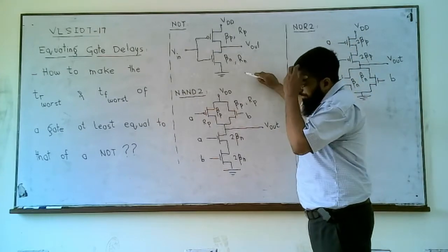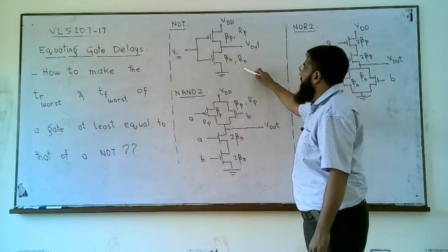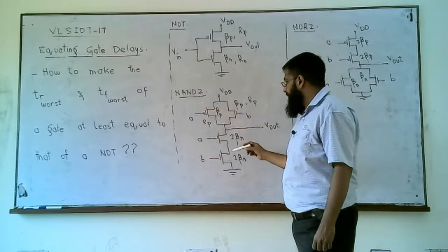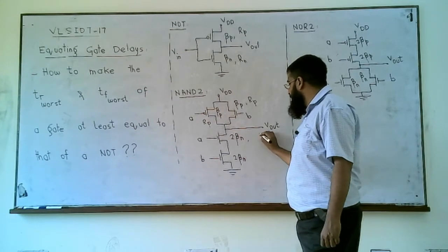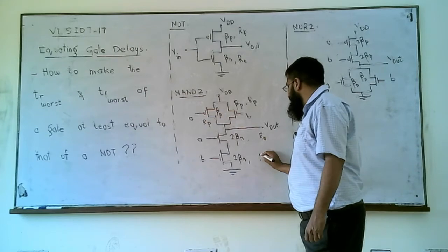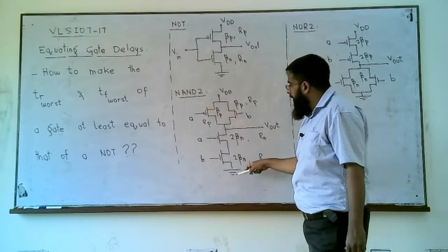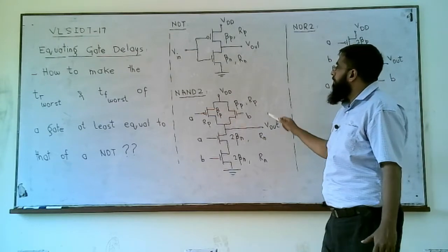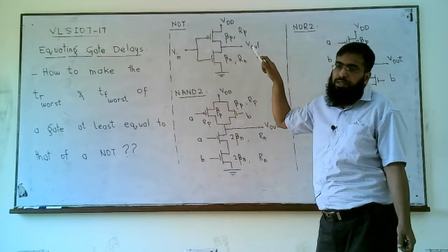How do we make the fall time delay of NAND2 equal to that of a NOT gate? Since the two NMOS transistors are in series, each with beta_n offering resistance r_n, the worst case when both are on gives a total resistance of 2r_n. Whereas for a NOT gate it is r_n, meaning the delay is doubled.